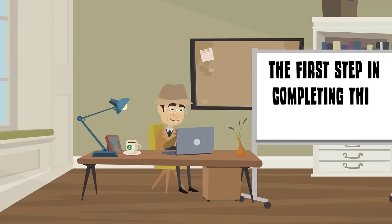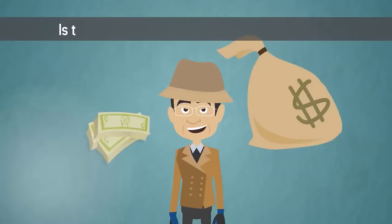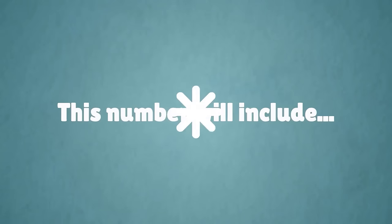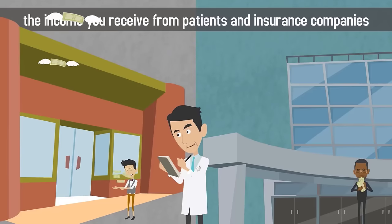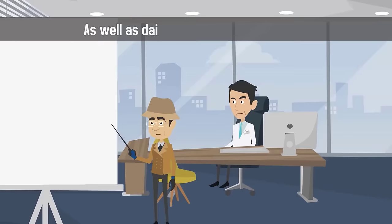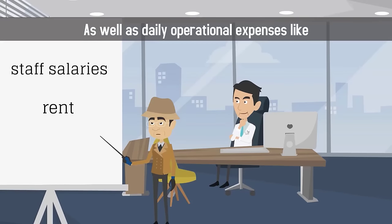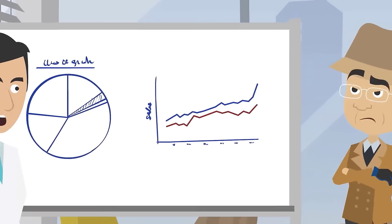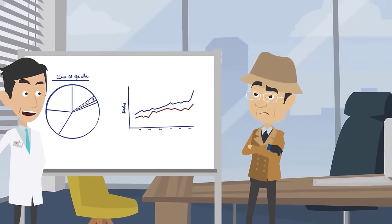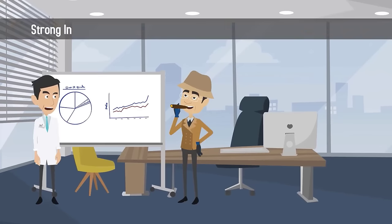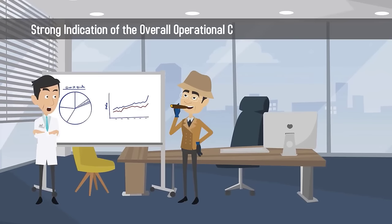The first step in completing this analysis is to estimate the cost of your operating activities. This number will include the income you receive from patients and insurance companies, as well as daily operational expenses like staff salaries, rent, and insurance. The net figure you arrive at after looking at inflow and outflow gives a strong indication of the overall operational cost of running your practice.